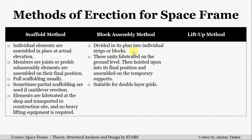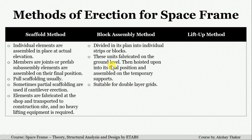The block assembly method is mostly suitable for double layer grids, which means structures that have structural elements in two layers. For huge areas where the entire work cannot be done by the lift up method at once, the work is done part by part, and in that case the block assembly method is used.